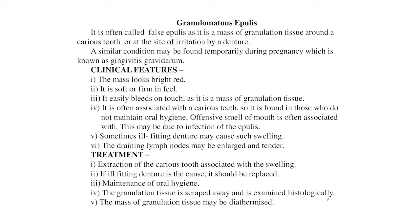Granulomatous epilis is often called false epilis. It is a mass of granulation tissue around a carious tooth or at the site of irritation by a denture. A similar condition may be found temporarily during pregnancy, known as gingivitis gravidarum. Clinical features: the mass looks bright red, is soft, and easily bleeds on touch.